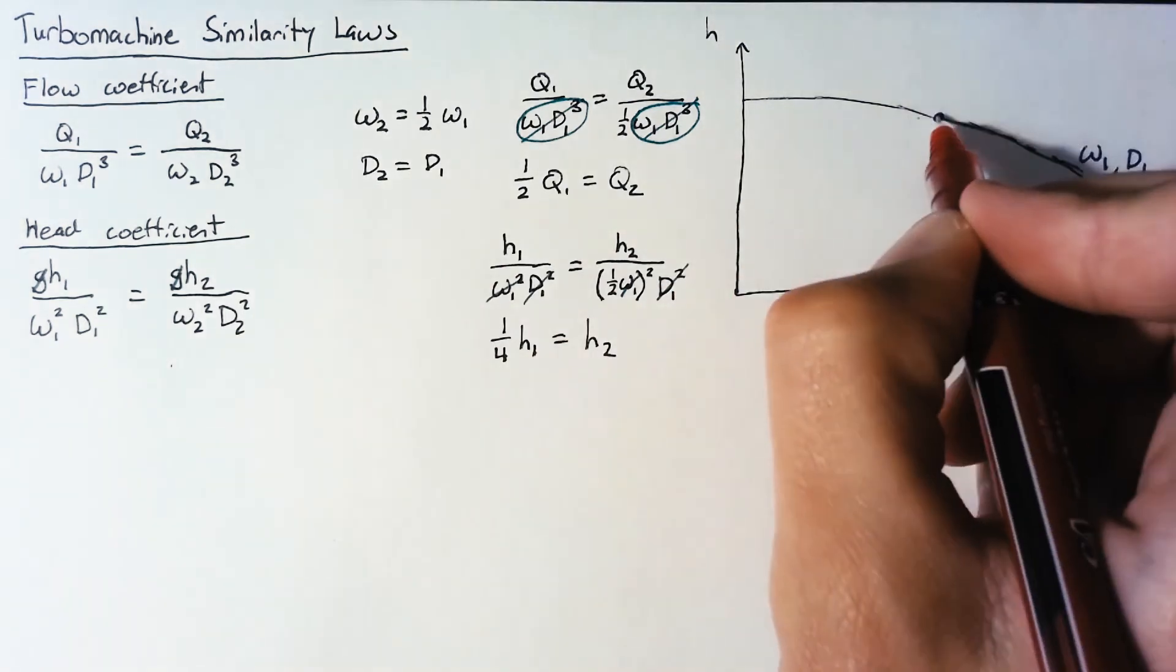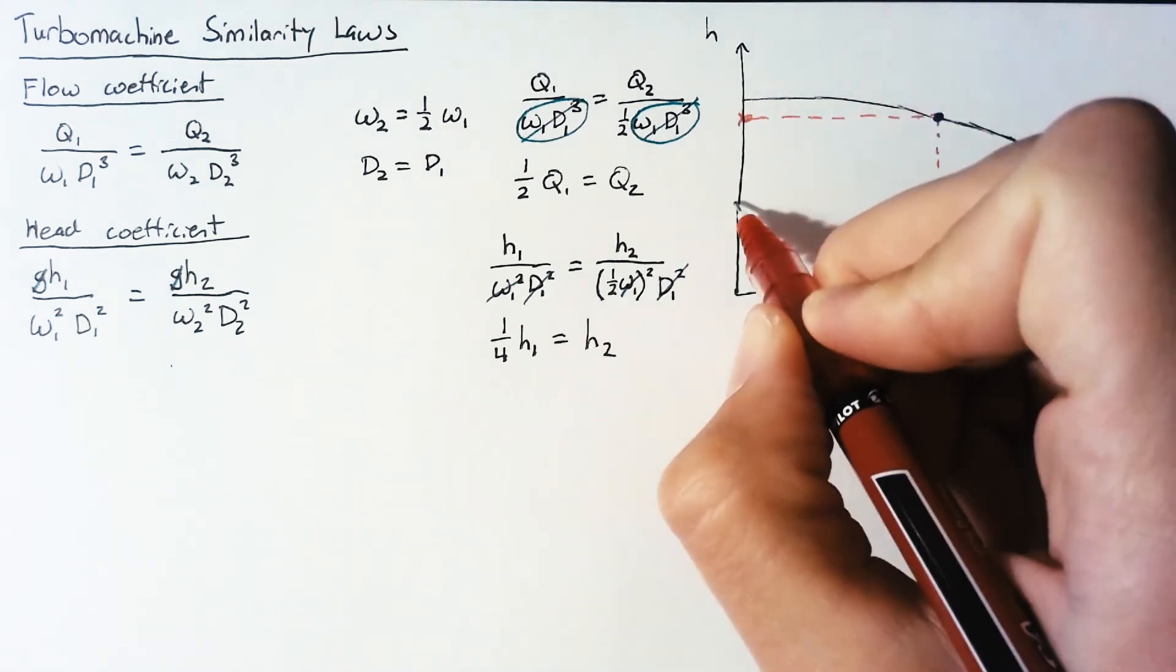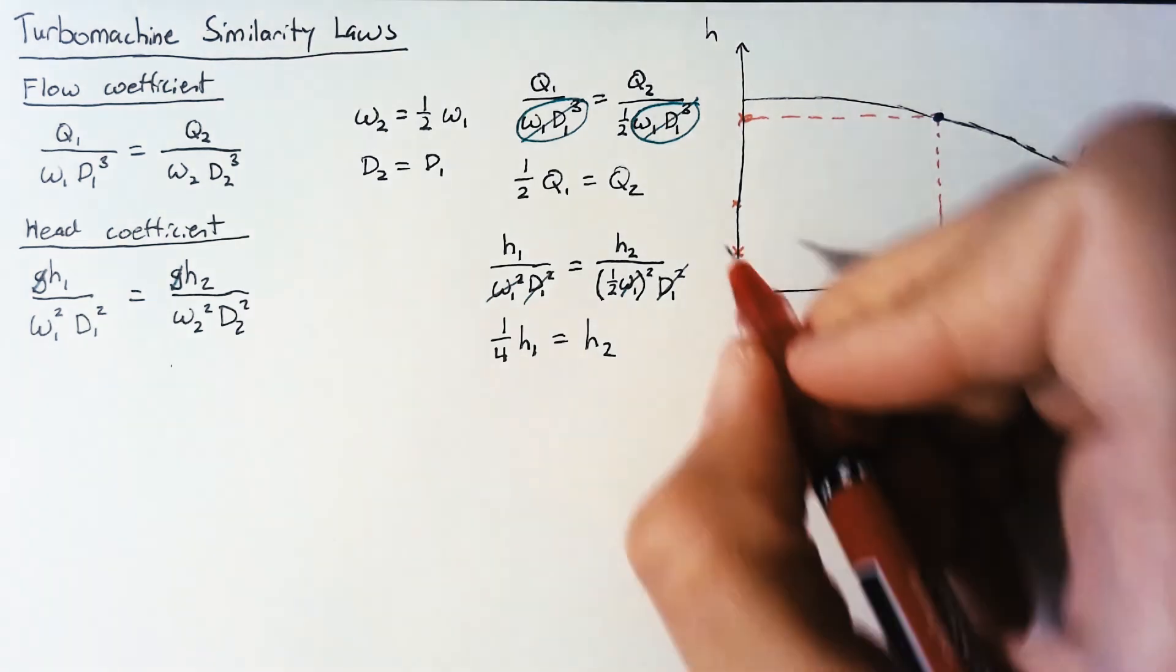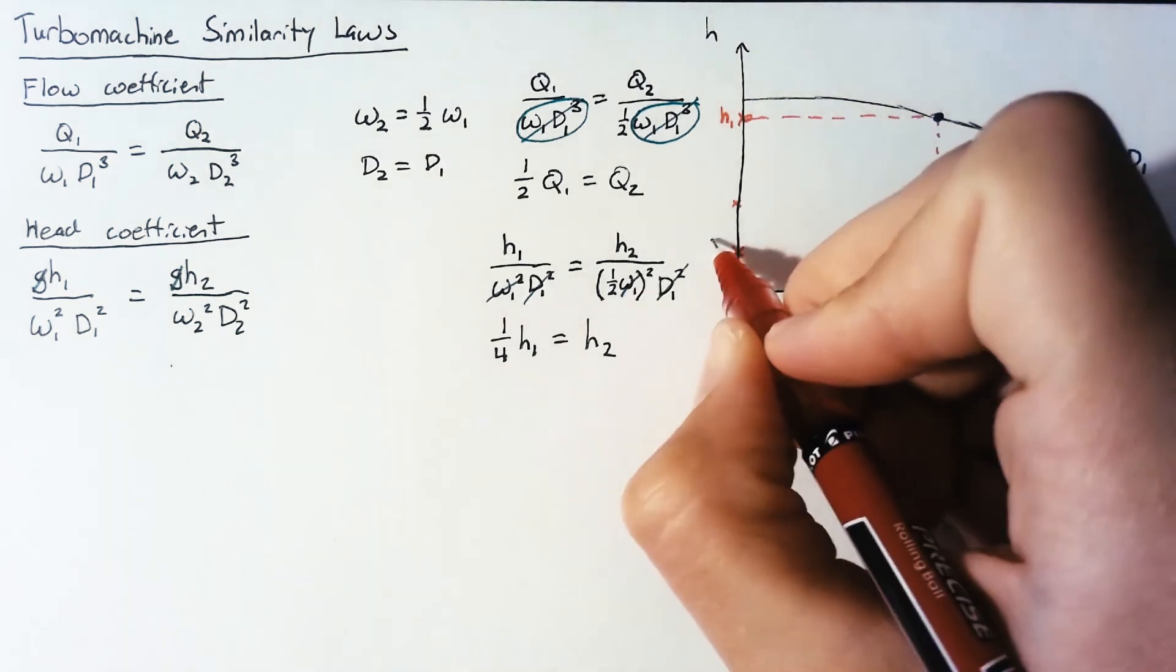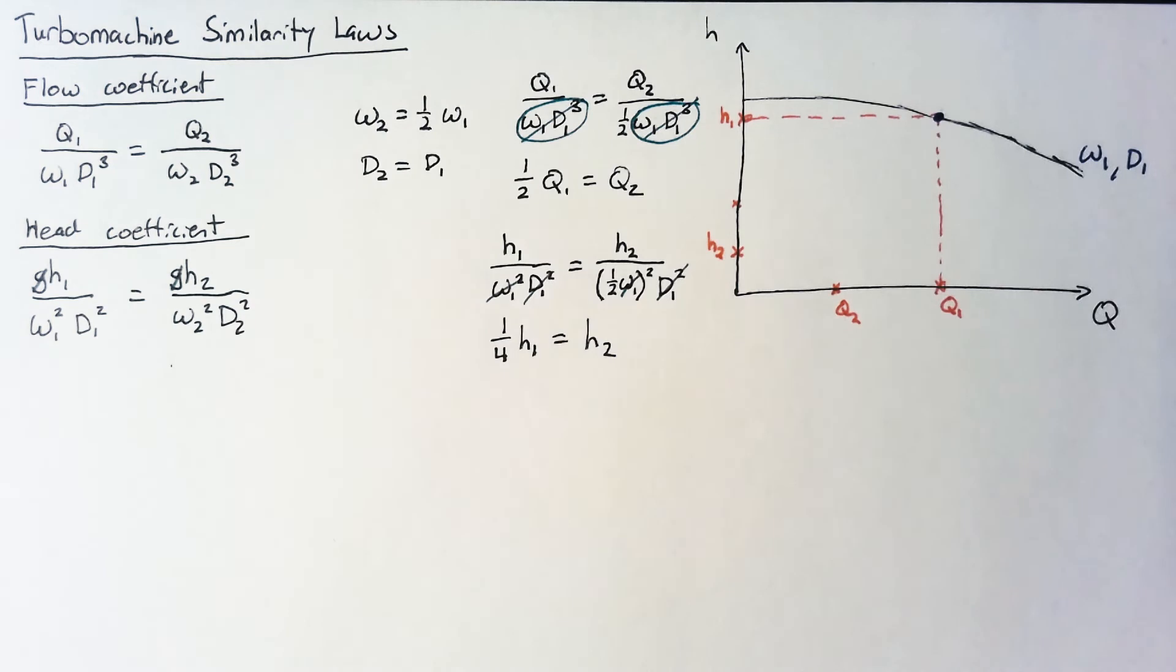This time after squaring this half and moving it to the left hand side we say that our h2 is one quarter of h1. So to find this value we come over and see what our current head is and then we can't half it, we actually have to cut it in a quarter. So this is our original head for this point and then for our new point our head is a quarter of the original.